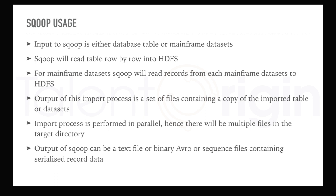Sqoop also allows you to validate the data that has been imported from your source. The default validation supported by Sqoop is row-count validation — meaning whenever you instruct Sqoop to validate the data from a job, it will perform a row count validation on the source and also on the target, then compare the results to confirm whether the migration or import of data from RDBMS to Hadoop was successful or not.